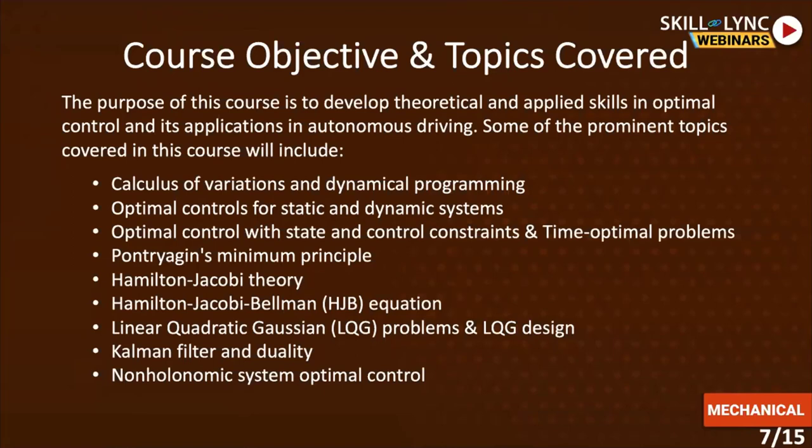Problems like fixed time and free time — where there is no limitation on time or there are constraints on time — will be covered. There are also sometimes path constraints, which we will discuss in the context of non-holonomic system optimal control. We will also talk about Pontryagin's minimum principle, Hamilton-Jacobi theory, the Hamilton-Jacobi-Bellman equation, LQG problems, and the Kalman filter and duality. Note that topics like LQG and the Kalman filter extend far beyond optimal control — they fall over into estimation theory as well, so this course will also prepare you for solving some estimation problems.